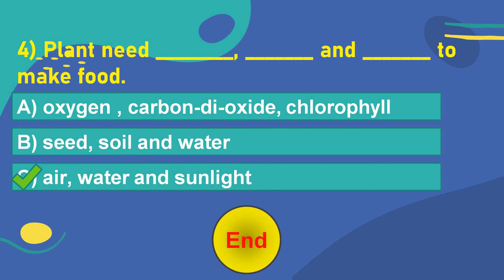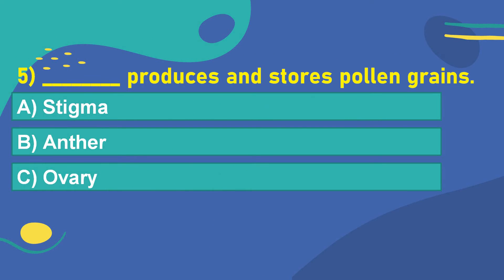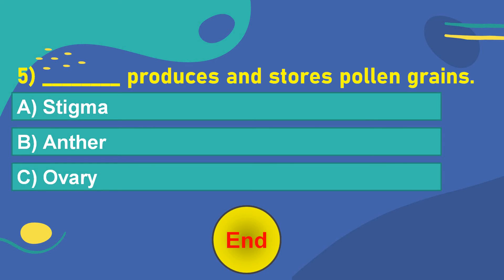Let's move on to the next question. The fifth question is: What dash produces and stores pollen grains? Option A: Stigma. Option B: Anther. Option C: Ovary. Think of the answer. Your time starts now. 5, 4, 3, 2, 1, 0. OK. The correct answer is Option B: Anther.